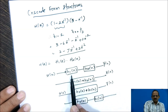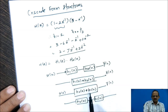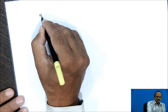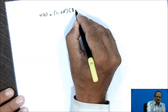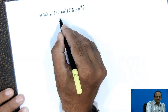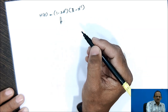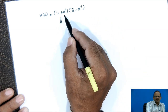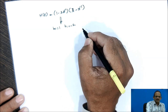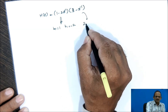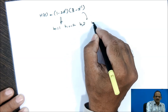H of z equals 1 minus 2z raised to minus 1 into 3 minus z raised to minus 1. Now let us realize this system. For H1(z) which is 1 minus 2z raised to minus 1, comparing to the standard equation, B0 equals 1 and B1 equals minus 2. Similarly, for H2(z), the value of B0 is 3 and the value of B1 is minus 1.